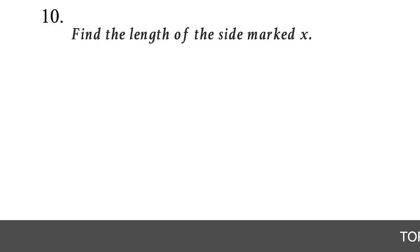Question 35. Find the measure of angle b. Identify that the mark on the triangle means it's a right triangle with one angle of 90 degrees. The sum of interior angles of a triangle is 180 degrees. So: 40 + 90 + b = 180. Adding: 130 + b = 180. Subtract 130: b = 50 degrees.